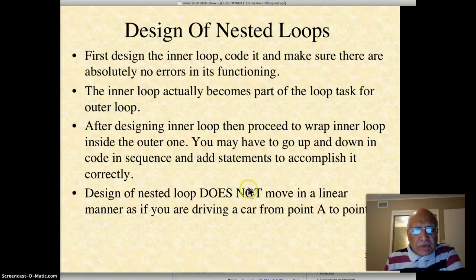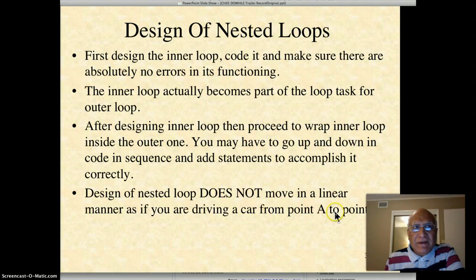Design of nested loops does not move in a linear manner, as if you are driving a car from point A to B. You have to go up and down in code sequence and add things to make it work correctly. There's no linear movement like if you're driving a car from Road State to 29th Street Mall. You may have to go up and down in the code to accomplish that.